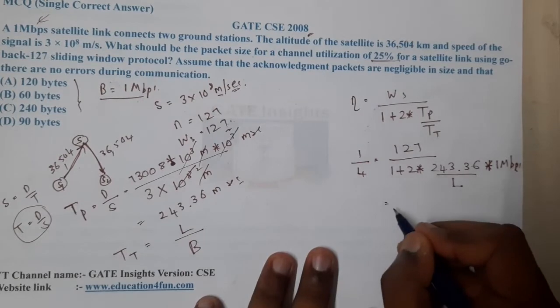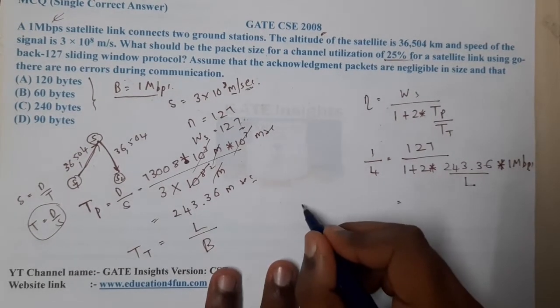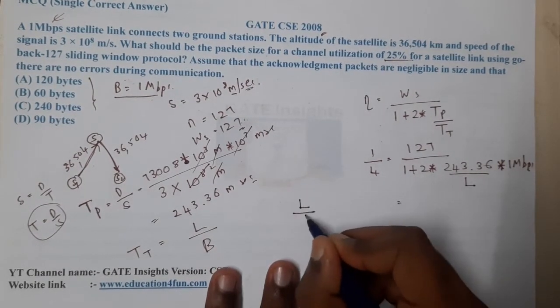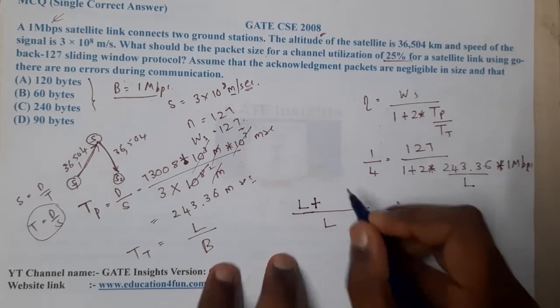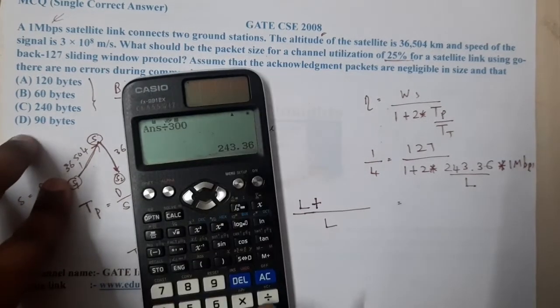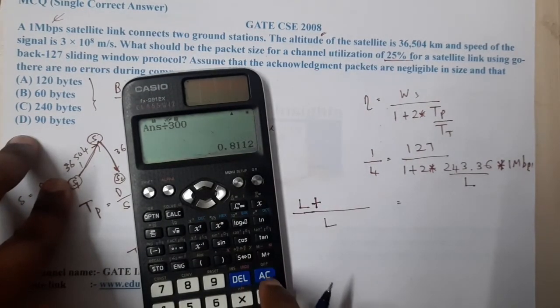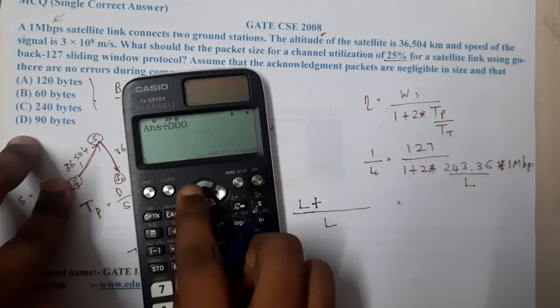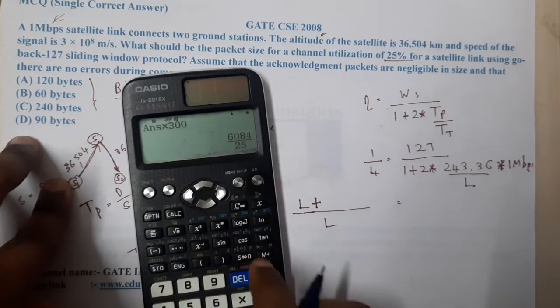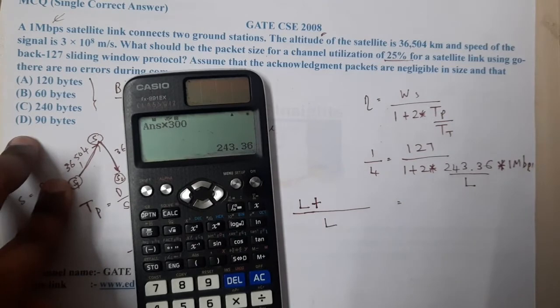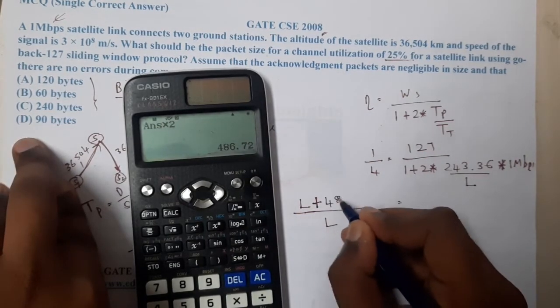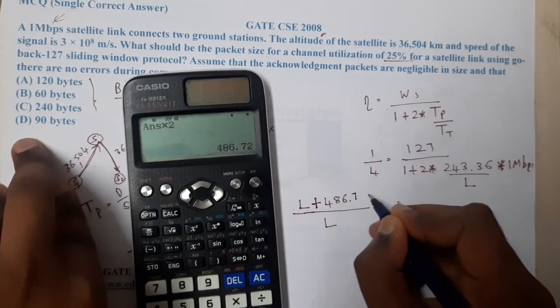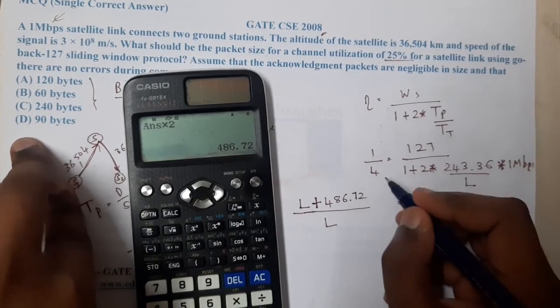On the other hand, we have 127 × 4 = 508. So 508L on one side. Let's send L to the other side, so 507L remains.